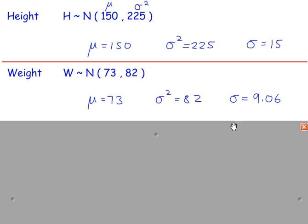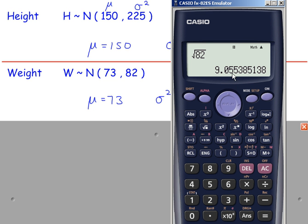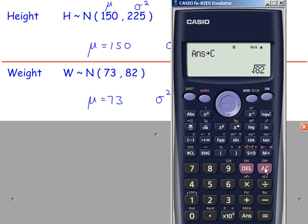If you're trying to use the standard deviation in a calculation, avoid using rounded values — just use it as the square root of 82. If you have a long value on your calculator and want to store it in memory, press Shift, Store, then one of the red letter keys like A, B, C, D, X, Y and so on. For example, I might store that in memory C. To recall it, just press Recall then C, and there's the value in its exact form or decimal equivalent.